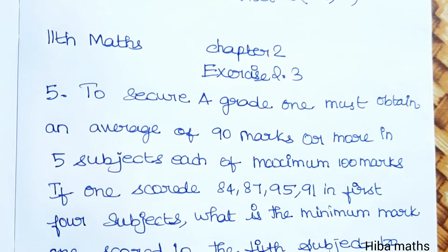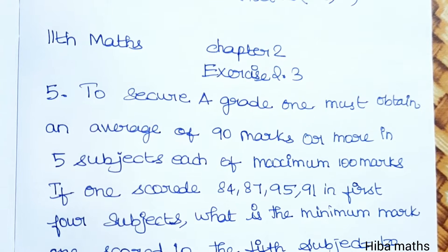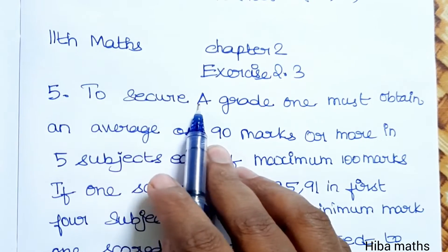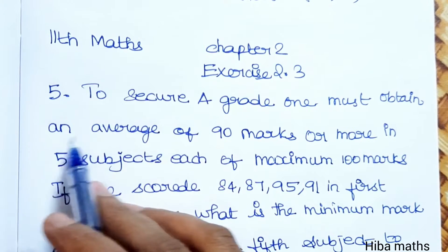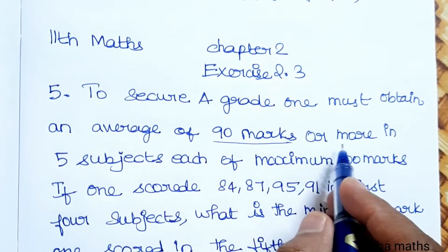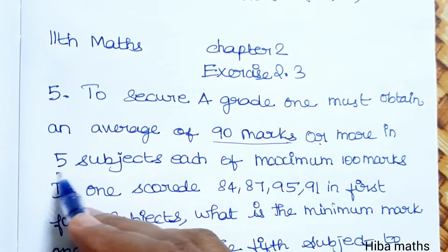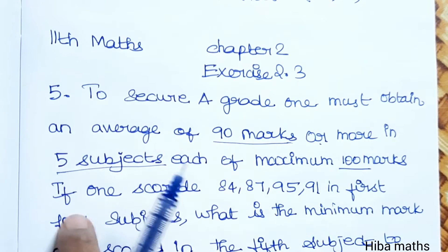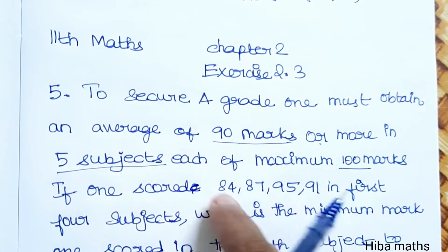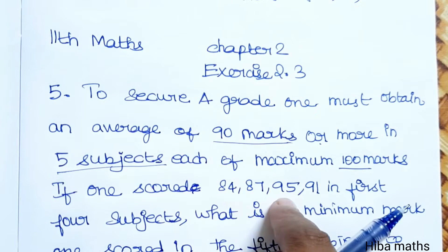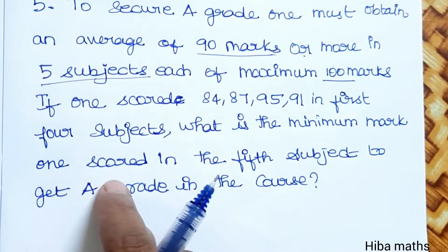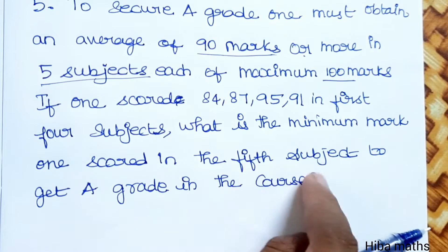Hello students, welcome to Hiba maths, 11th standard maths chapter 2, exercise 2.3, 5th question. To secure a grade, one must obtain an average of 90 marks or more in 5 subjects, each of maximum 100 marks. If one scored 84, 87, 95, 91 in first four subjects, what is the minimum mark one scored in the fifth subject to get A grade in the course?